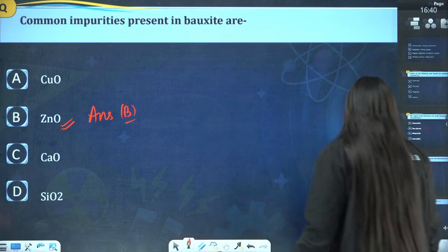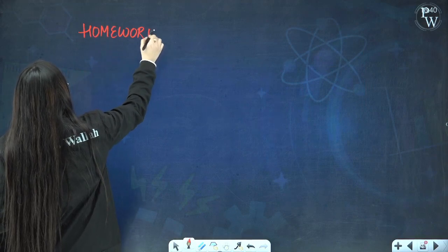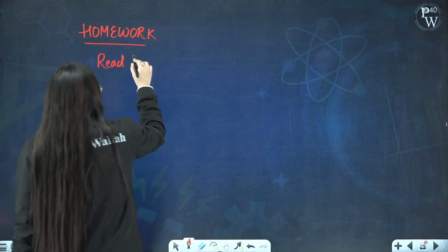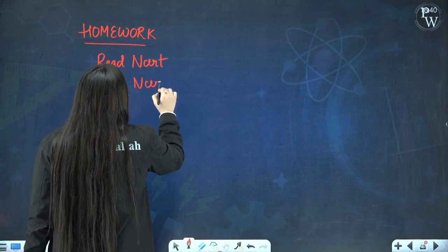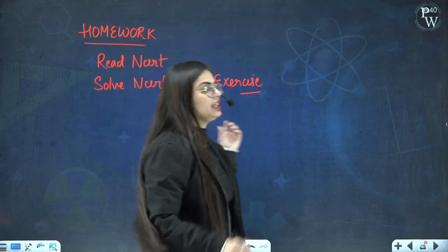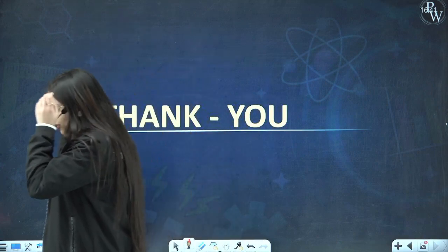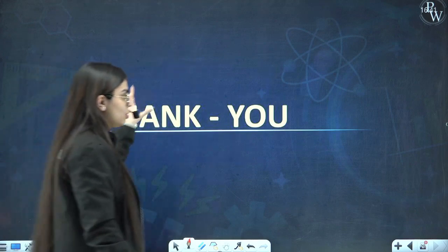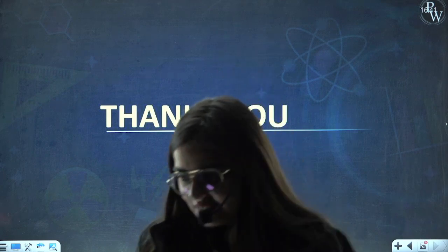Your today's homework is to read NCRT because it is really very important — read NCRT and solve the NCRT back exercise. This was an introductory segment for the chapter metallurgy covering the very first topic. We shall meet in the next lecture and cover the next topic. One initial method — concentration of ores — has been covered; the next two methods will be covered in our next segment. Till then keep smiling, keep learning. Thank you so much and have a good day.